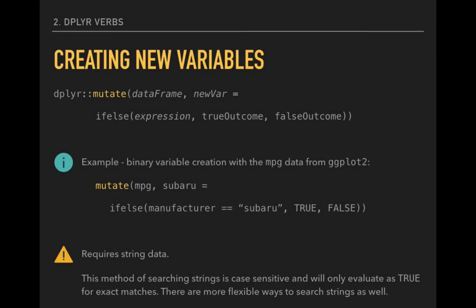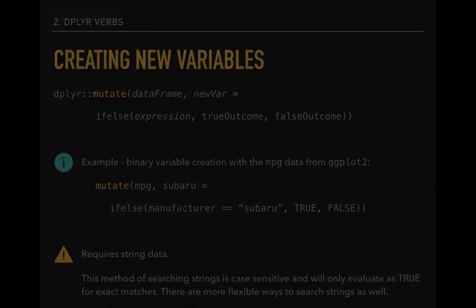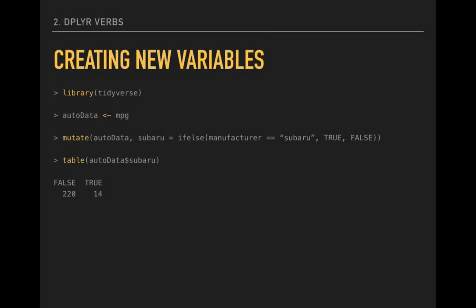For example, we can create a logical variable that indicates whether a car is made by Subaru or not. There is not output associated with successful implementations of the mutate function. It's a good idea to check the results using the table function, which gives us a simple frequency for each category present in our variable. Note that the table function uses a dollar sign. And recall that multiple data frames are possible in R. To retrieve data from a specific variable, it is often necessary to include references to both the data frame and the variable. We separate the two objects with a dollar sign.